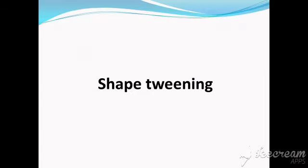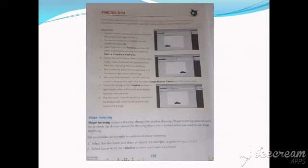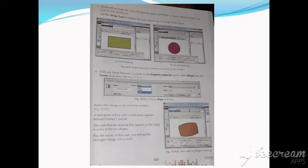Second, we are having shape tweening. In shape tweening, you are going to convert one shape into another shape — it makes a drawing change into another drawing. When using frame-by-frame or motion tweening, you have to convert your object into a symbol, which is saved into the library. But in shape tweening, you are not supposed to convert your object into a symbol. The steps for shape tweening: select a frame, draw the object, then choose a key frame from the timeline. A light green color with a solid arrow appears between frame 1 and 40. You create two different shapes, as seen on page number 157.